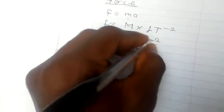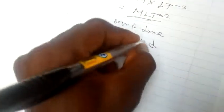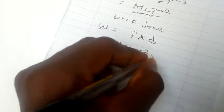The last one is work done. The dimension for work done is force multiplied by distance. We've already gotten force as M L T minus two, so it should be M L T minus two multiplied by distance, which is L. Let's take out the L to solve it.